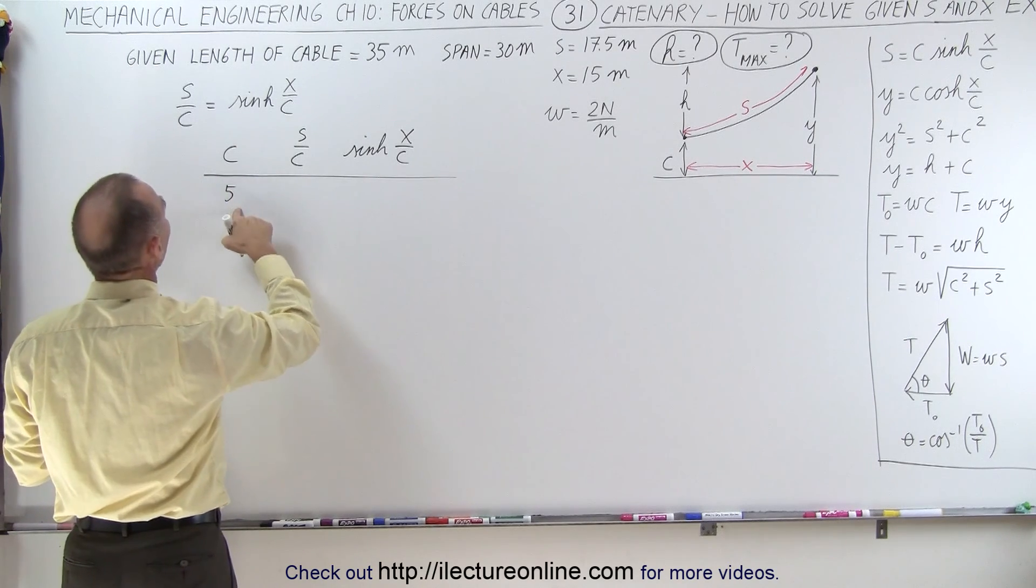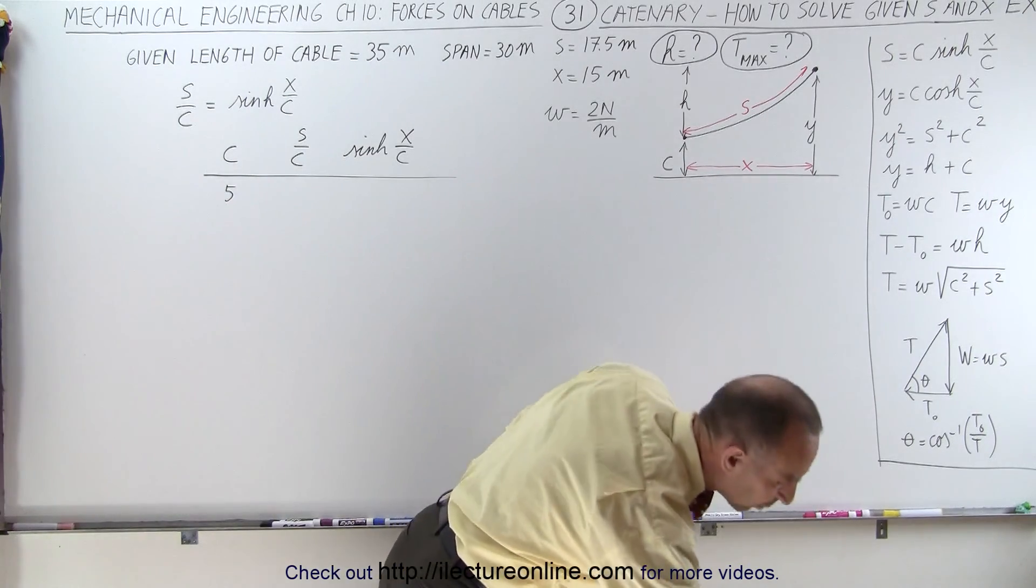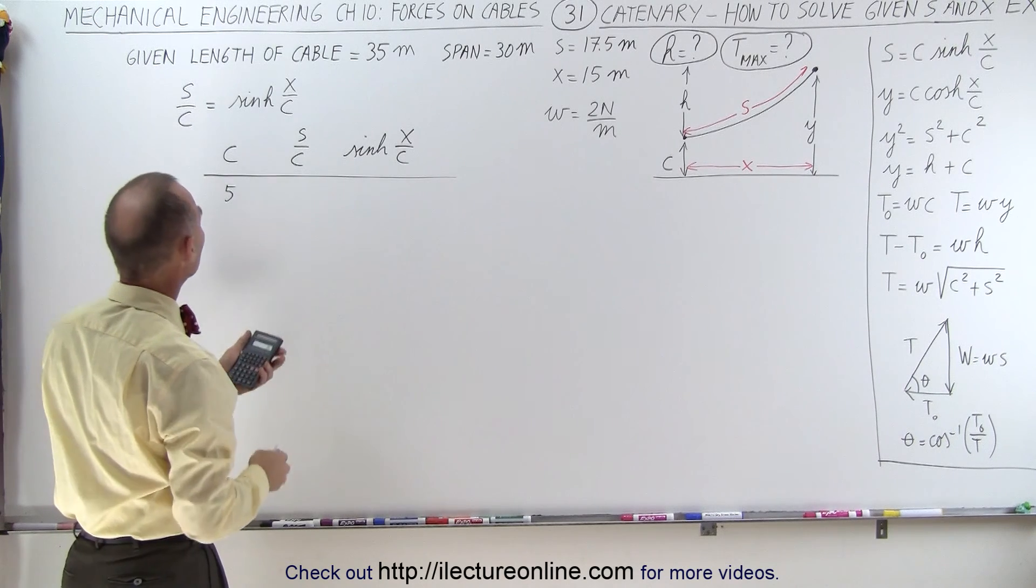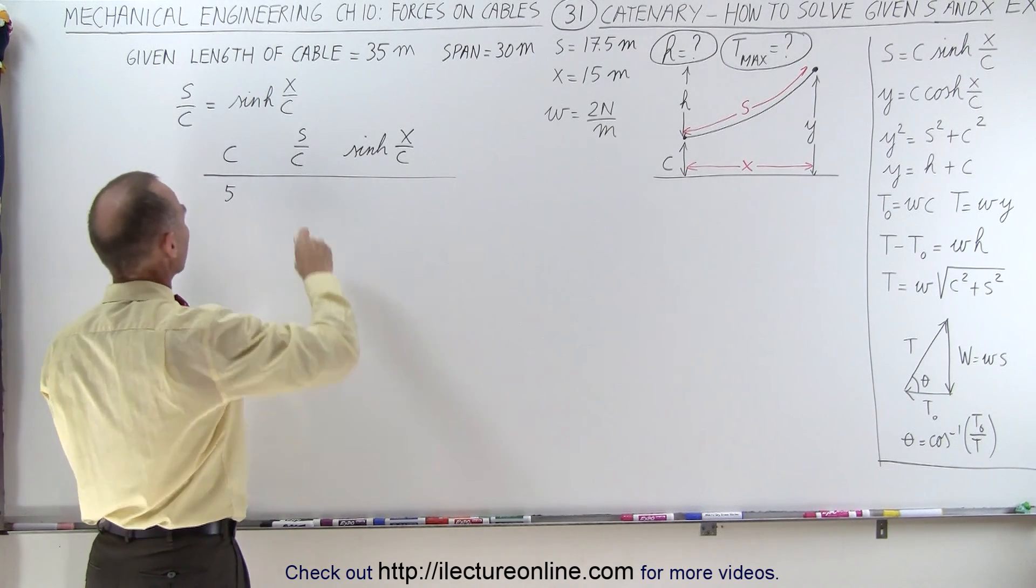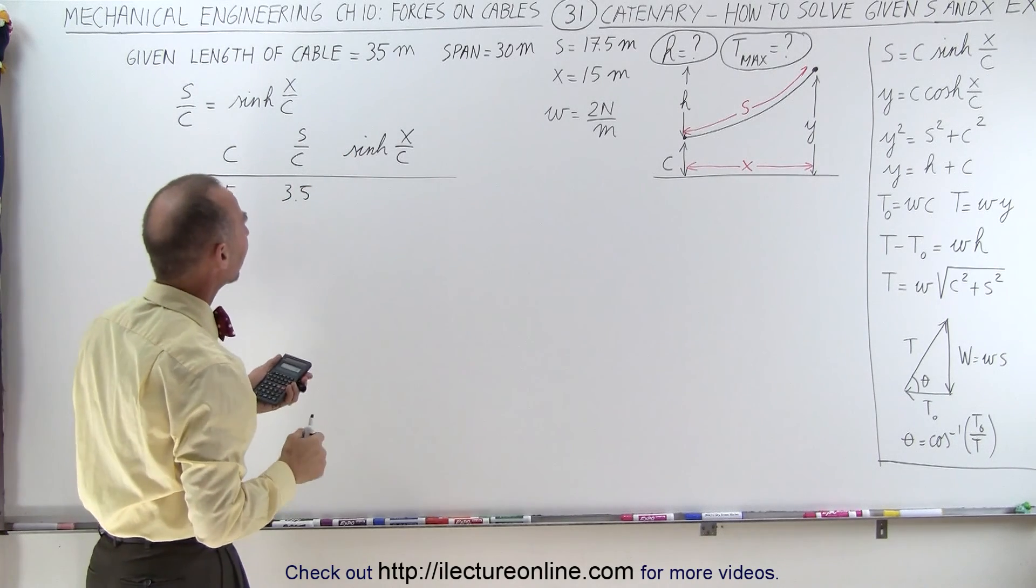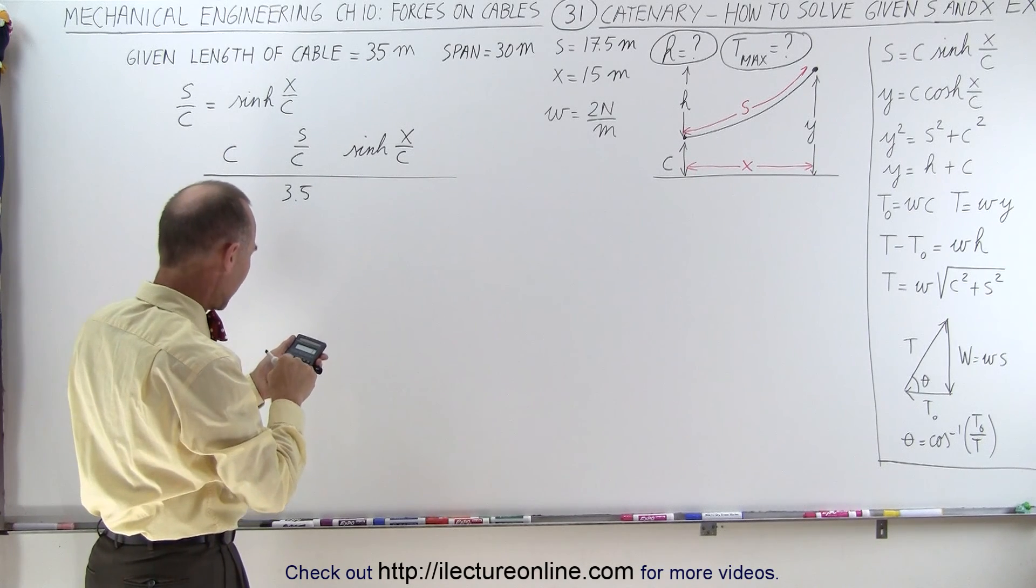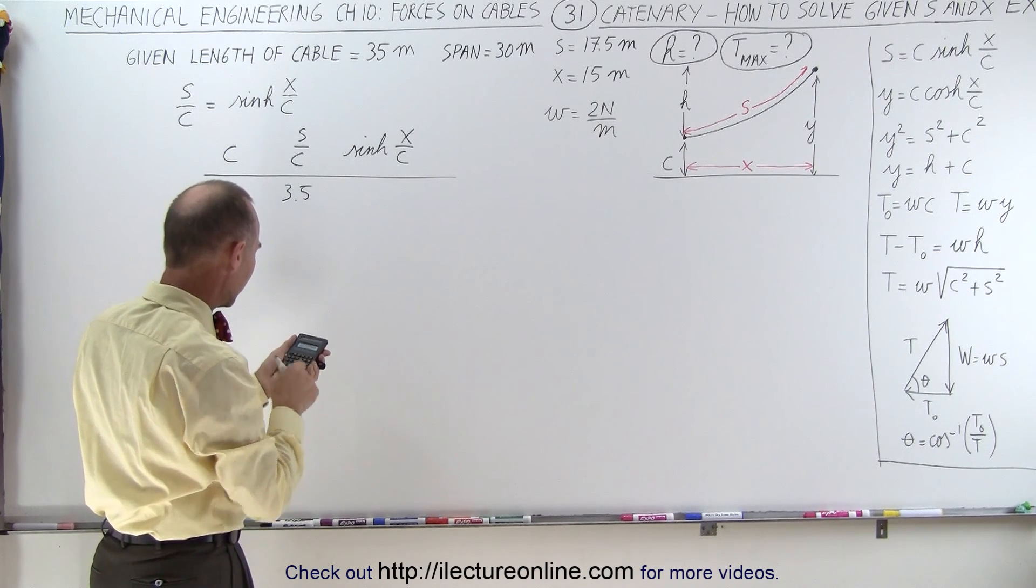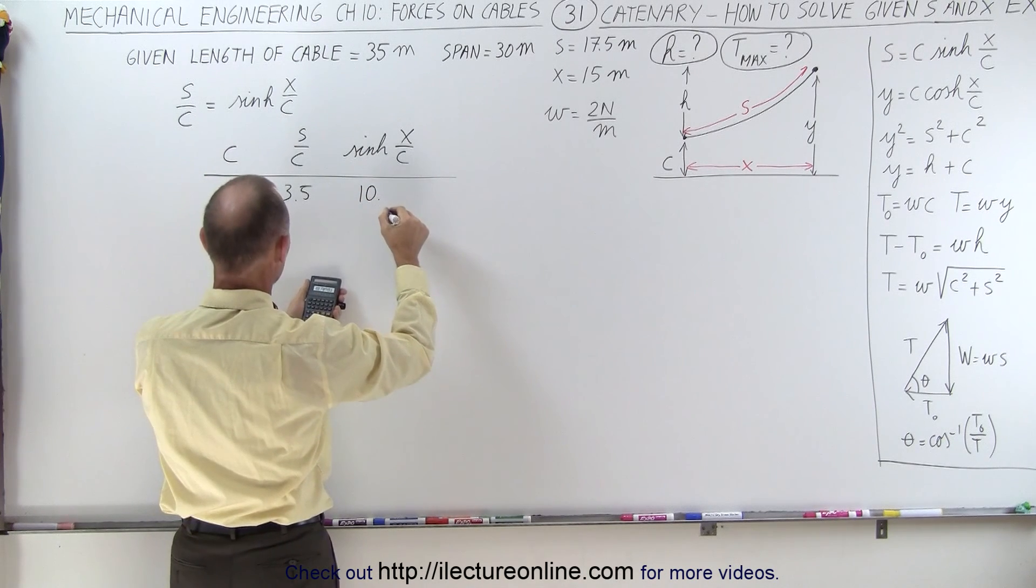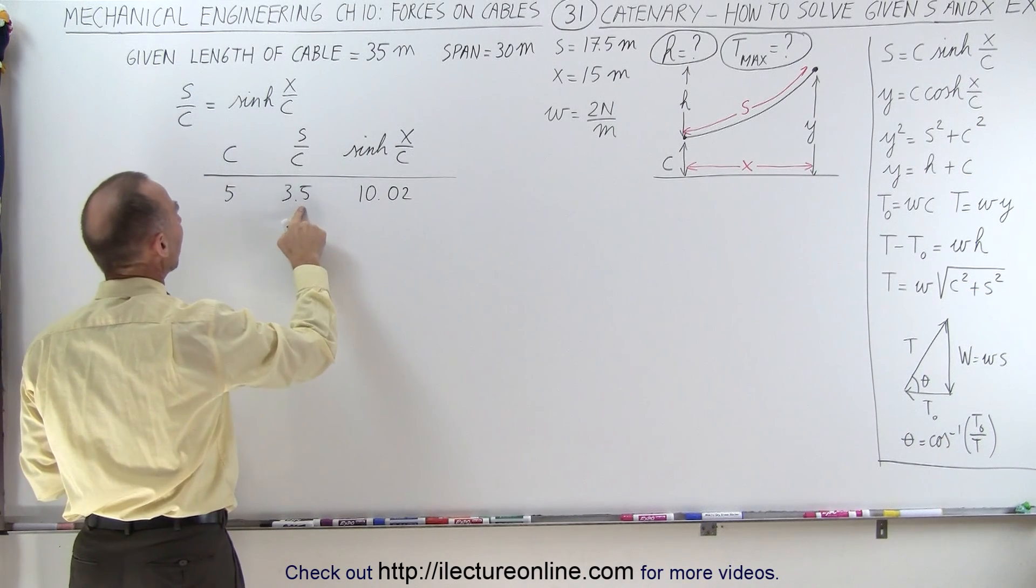When C equals 5, since S is 17.5, we have 17.5 divided by 5, of course 3.5, and the hyperbolic sine of X over C, X is 15 divided by 5, that's 3, take the hyperbolic sine of that and we get 10.02. This is much bigger than that.